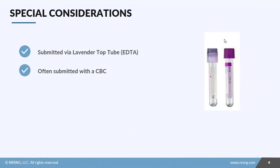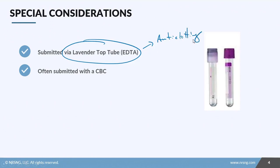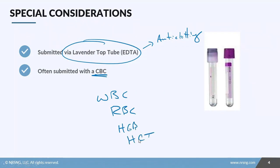What do you need to consider when drawing blood samples? Your platelet samples are submitted in a lavender top tube with EDTA, which contains an anti-clotting preservative. It's commonly submitted with the CBC, which looks at your white blood cells, red blood cells, hemoglobin, and hematocrit — it's all part of that big CBC.